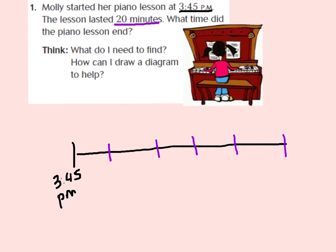Make sure that you're drawing your timeline just like mine. If I'm at 3:45 and I add 5 minutes, I will be at 3:50 p.m. I need to go to 20 minutes, so from 3:50 I'm going to add another 5 minutes, and I will be at 3:55 p.m.